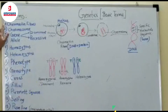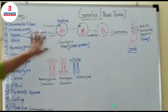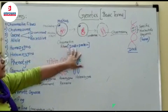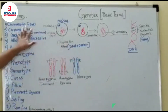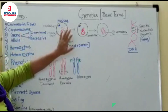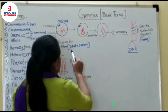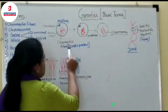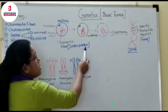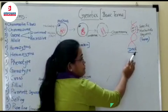So two points are clear from this: what are chromatin fibers? Chromatin fibers are basically DNA plus protein. And a chromosome is basically the condensed form of chromatin fiber. Now, as we have seen that chromatin fibers are made up of DNA plus protein, let's look at the structure of DNA.